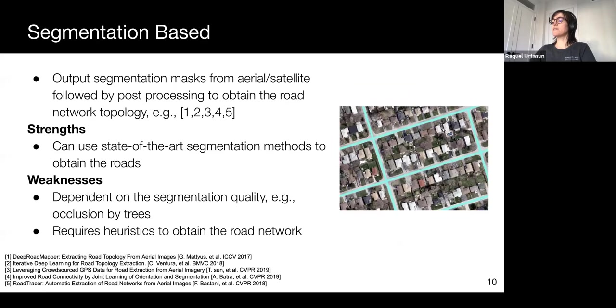To obtain topological maps, a set of methods apply road binary segmentation on aerial or satellite images, followed by post-processing algorithms to obtain the road network. The strength of these methods lies in that they can use state-of-the-art segmentation methods to obtain the roads. However, this could also be the weakness since the road network extraction depends on the segmentation quality. For example, if there are occlusions due to building shadows and trees, the extraction might fail. One is also dependent on the post-processing algorithm used, which might prove to be very brittle.